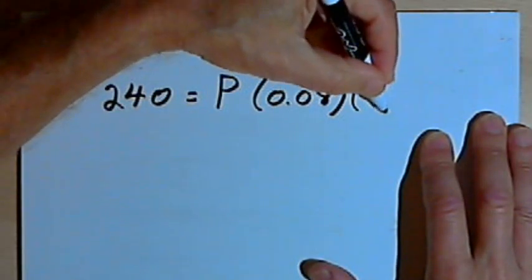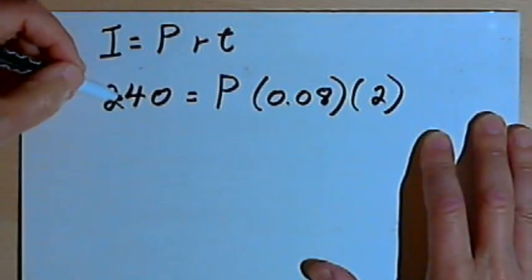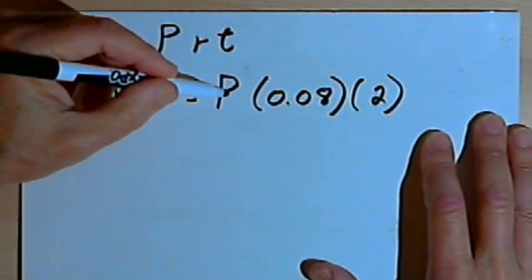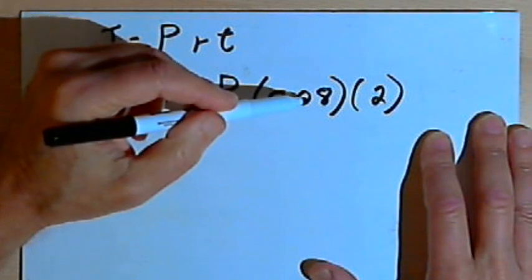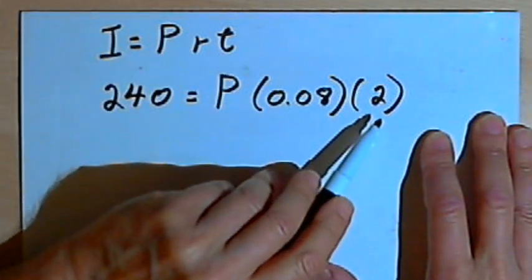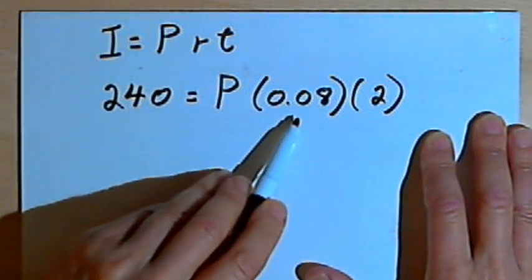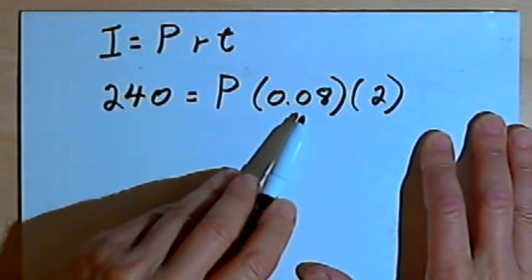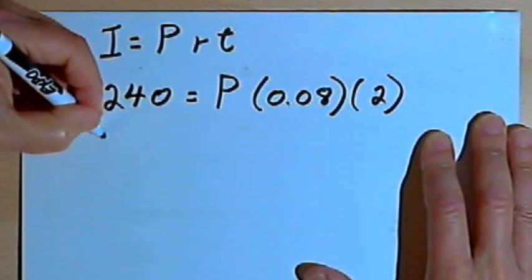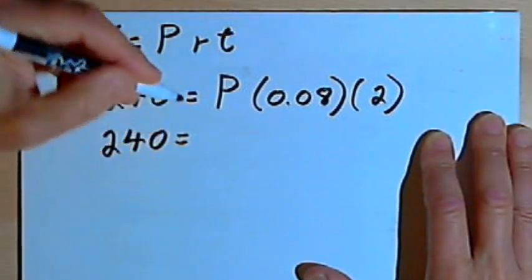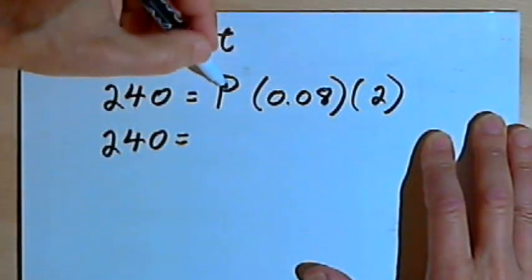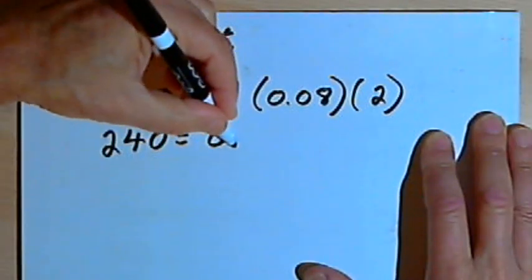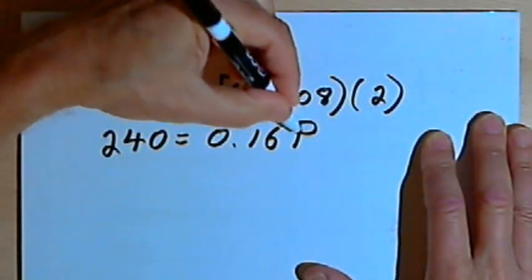So I'll just write it 2. So 240, the interest, is going to equal P times 0.08, which was the rate, times 2, which is the time. So I can multiply that 2 times 0.08. And I'm going to end up with 240 equals 0.16P.